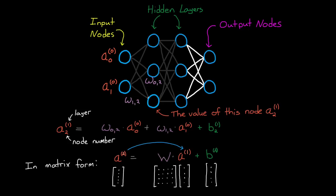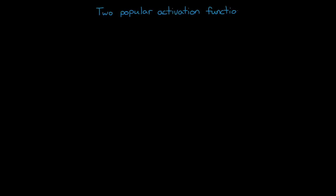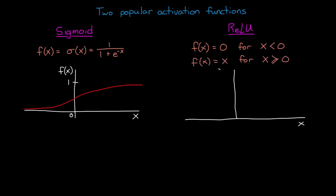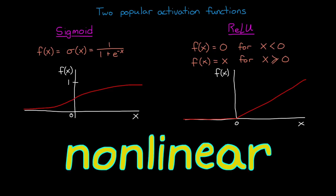After the value of a node has been calculated, an activation function is applied that changes the value of the node in some way. And two popular activation functions are the sigmoid, which squishes the node value down between 0 and 1, and the ReLU function, which basically zeroes out any negative node values. There are a number of different activation functions, but what they all have in common is that they are non-linear, which is critical to making a network that can approximate any function.